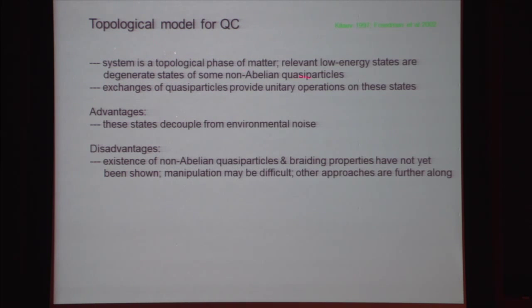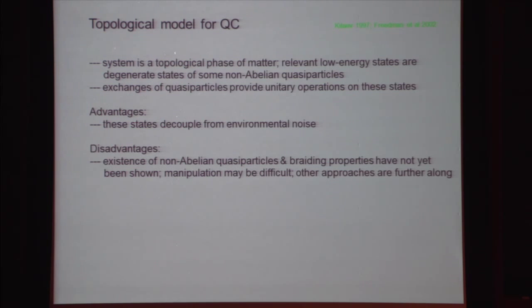The idea of topological quantum computation, introduced by Kitaev and Freedman and co-workers, is that we take our system to be a topological phase of matter and focus on the degenerate low-energy states of some non-abelian quasiparticles. Performing adiabatic exchanges of quasiparticles performs a unitary operation on the states. The advantage is that these degenerate states are in principle exponentially well decoupled from external sources of noise. The disadvantage is that we have yet to demonstrate the existence of non-abelian quasiparticles, and manipulation of them may be difficult.